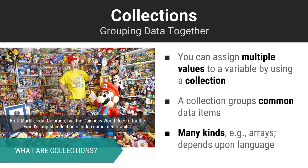Most programming languages also support data types that are some sort of collection. Collections are exactly what they sound like — they are groups of like, related information, like a collection of video game memorabilia, for example. By using a collection, you have the ability to assign multiple values to a single variable. Each language supports its own set of collections. For example, many languages support a type of collection known as an array. You will often hear these constructs referred to as data structures.